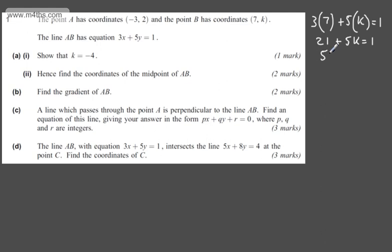Subtracting 21 from both sides, 5k will equal -20. Dividing both sides by 5, k will equal -4 as required.